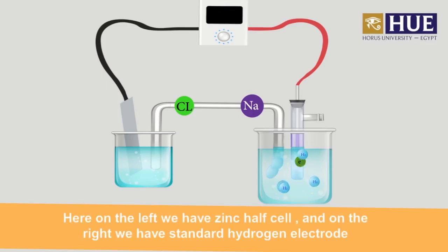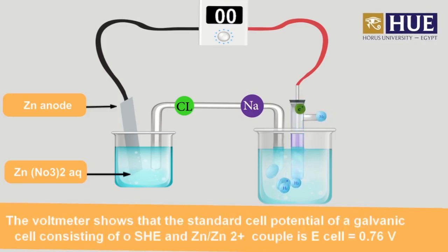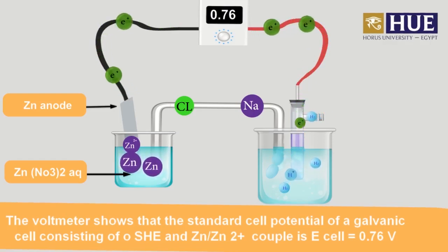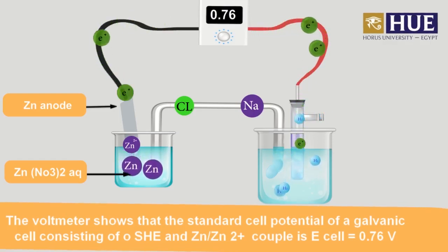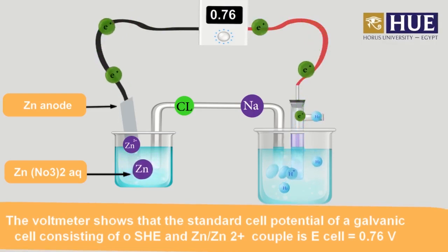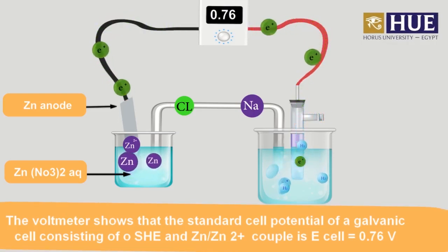Here on the left we have a zinc half-cell, and on the right we have the standard hydrogen electrode. The voltmeter shows that the standard cell potential of a galvanic cell consisting of the standard hydrogen electrode and the zinc/zinc-ion couple is equal to 0.76 volts.